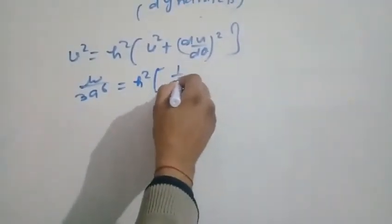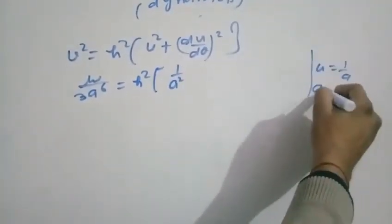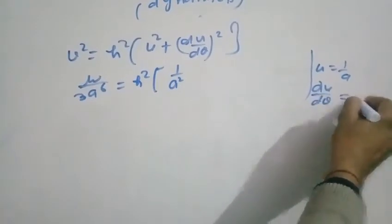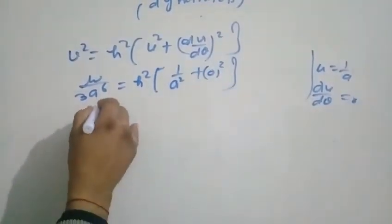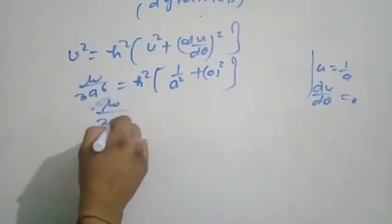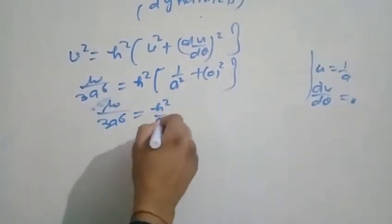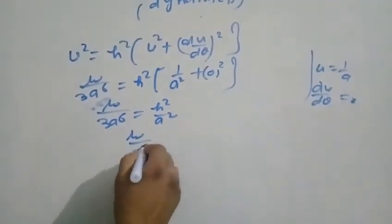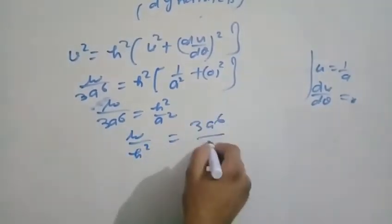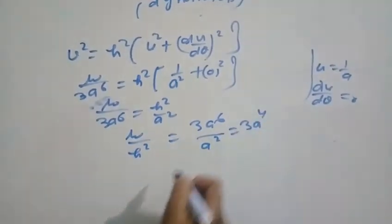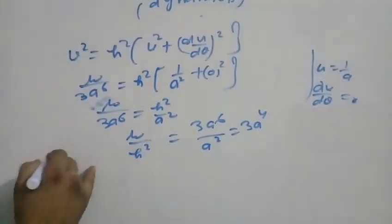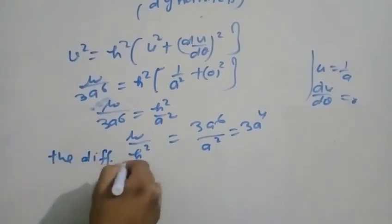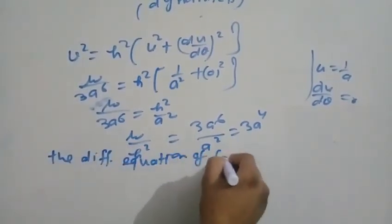At the apse: v = h·u, so h = v/u = √(μ/3a⁶) · a = √(μ/3a⁴). Therefore h² = μ·a²/(3a⁶) = μ/(3a⁴). Now we apply the differential equation of the central orbit.